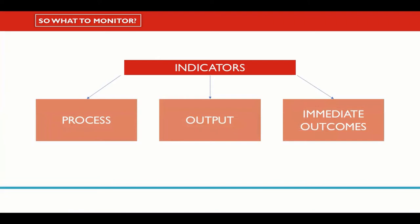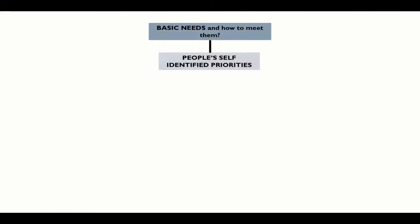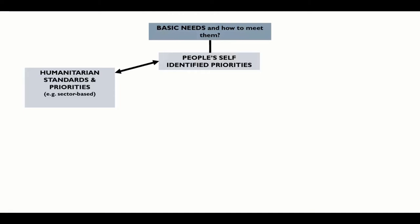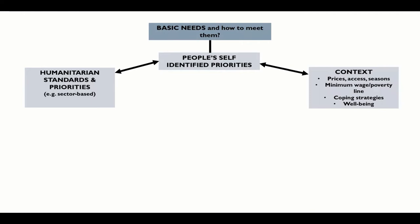The most significant differences relate to medium-term outcomes. When monitoring MPC outcomes, we can be looking at measures of both people's ability to meet their own self-defined needs and whether minimum humanitarian standards, such as sectoral standards, are being met. We will also need to monitor and look at the context in which MPCs have been given, such as price fluctuations, any changes in access, seasonality, coping strategies, and wellbeing.